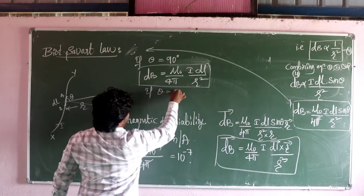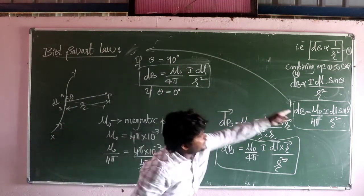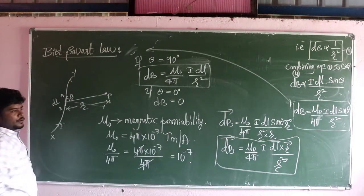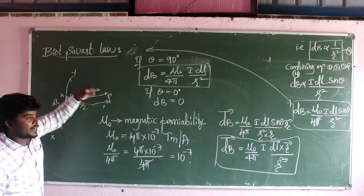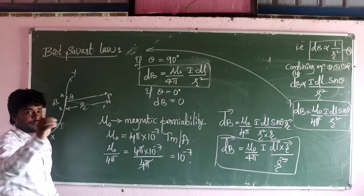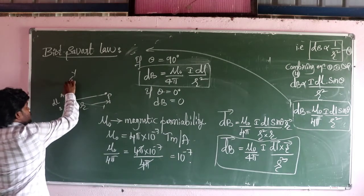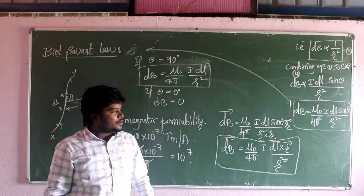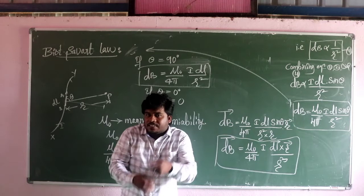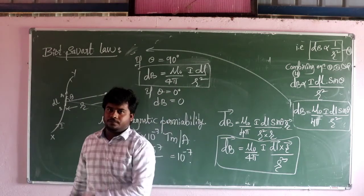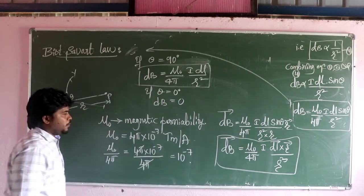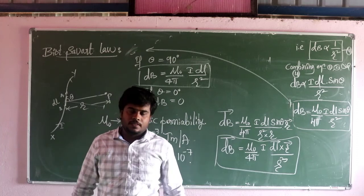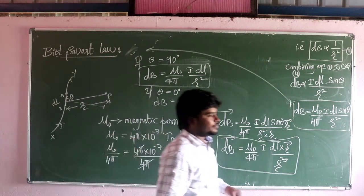If theta is equal to 0 degrees — this point is very important — sin 0 equals 0, and 0 into anything equals 0. This means the magnetic field at a point on the current-carrying conductor itself is zero. So the magnetic field due to a current-carrying conductor at a point on itself is zero. This is a very important point — you should practice it again and again.